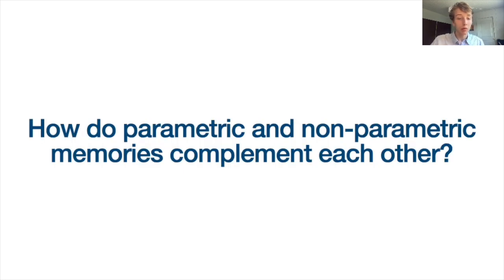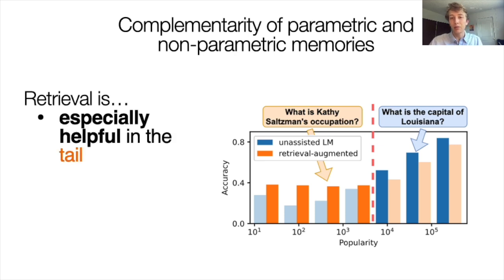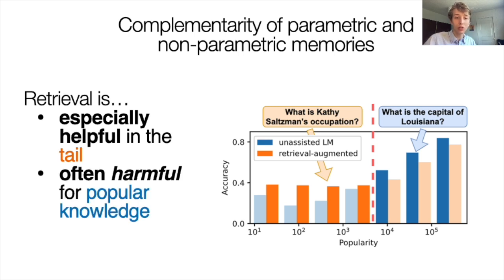We've been talking about parametric and non-parametric memories separately, but our paper crucially also focuses on how they complement each other. One of our main findings is shown in this slide, where we have a graph showing PopQA accuracy of GPT-3 versus the subject-entity popularity, with and without retrieved passages. Notice how retrieval is especially helpful for questions about tail entities, as there may be gaps in the language model's parametric knowledge that can be remedied with non-parametric augmentation using large and grounded web corpora. However, also notice that the use of retrieved documents is actually harmful for questions about the most popular entities.